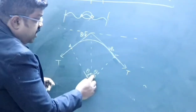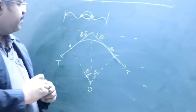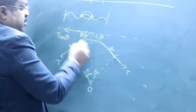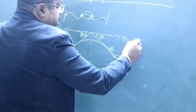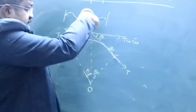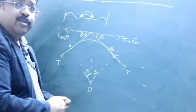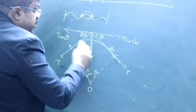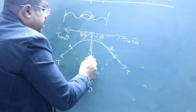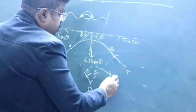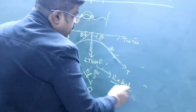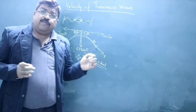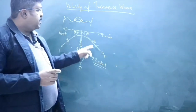So this is T at angle theta, giving T cosθ and T sinθ components. Similarly for the other side: T cosθ in the horizontal direction and T sinθ in the radial direction. The two T cosθ components act in opposite horizontal directions and cancel out. So the net force on this segment acts along the radial direction and equals 2T sinθ.